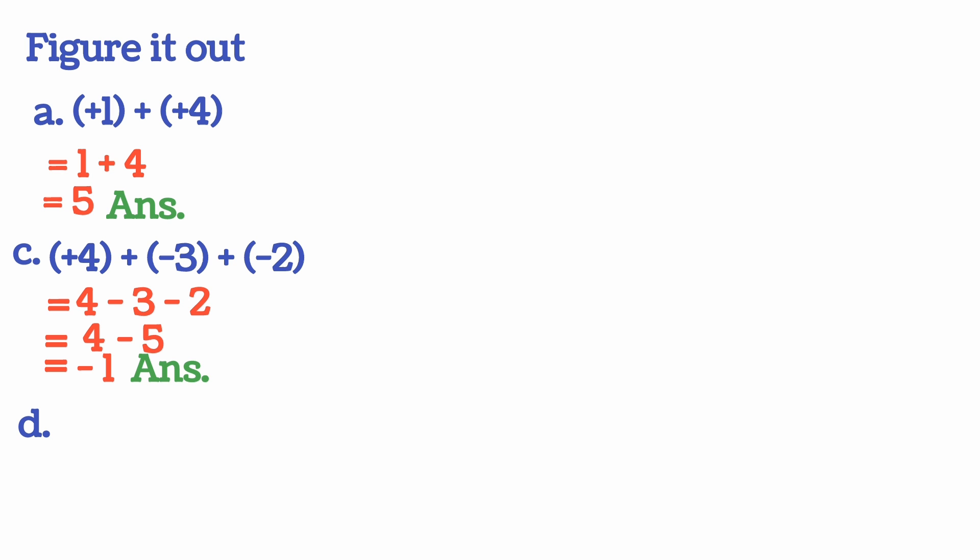Now next sum is sum number D. (-1) + (+2) + (-3) inside the bracket. We will remove the bracket. These steps students do very, very carefully. First is minus 1, so write minus 1. Plus, plus 2, so plus 2. Next again, plus, minus, minus 3.